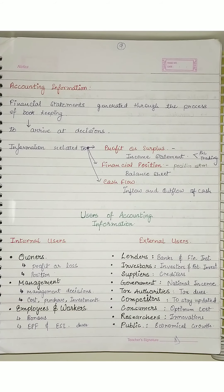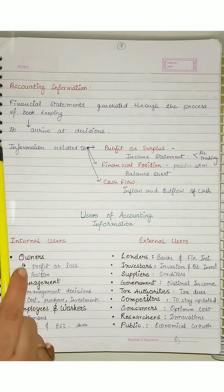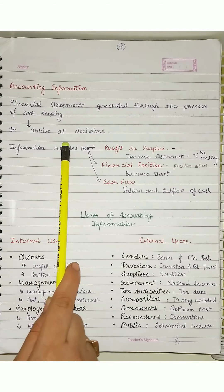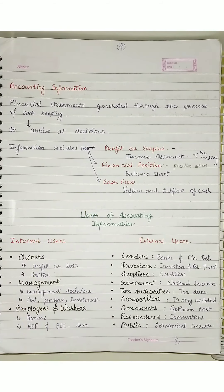What do we call accounting information? The financial statements generated through the process of bookkeeping — to arrive at some decisions. So this is the information that we get; that is accounting information.